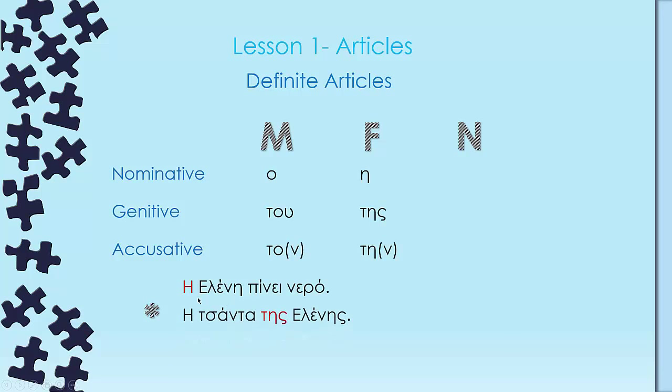Η τσάντα της Ελένης. The bag of Ελένη. So here Ελένη has a bag, it's her bag, so we're going to use genitive. Whose is the bag? Της Ελένης. Πήγα σχολείο με την Ελένη. I went to school with Ελένη. Now Ελένη here is the object of the sentence, so we're going to use accusative in order to match the definite article with Ελένη, so την.